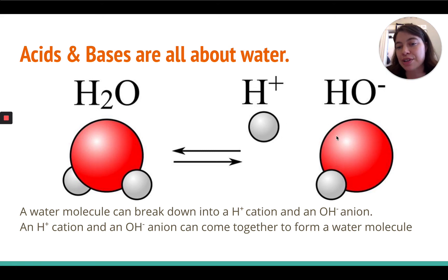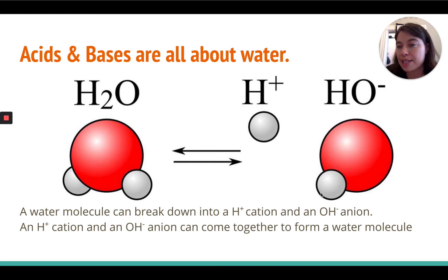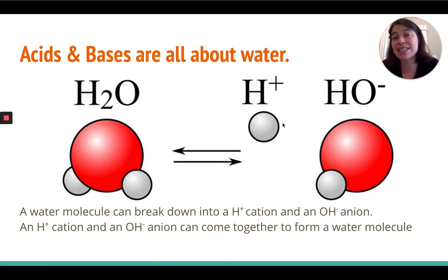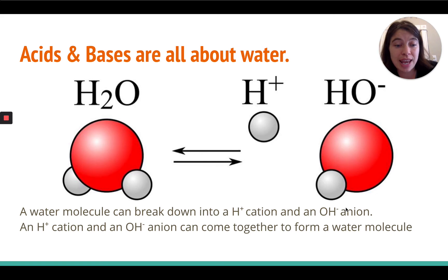Sometimes water molecules can actually break down and separate into two pieces. This hydrogen cation can pop off, and when that happens you'll be left with a hydrogen cation and a hydroxide OH negative. The big red one is the oxygen, the white one is the hydrogen — this is an anion, this is a cation. If you have water, you'll have about the same number of hydrogen cations and hydroxide anions. But if you add in an acid or a base, you could end up with extra of one or the other. Extra hydrogen cations means you have an acid; extra hydroxide anions means you have a base.